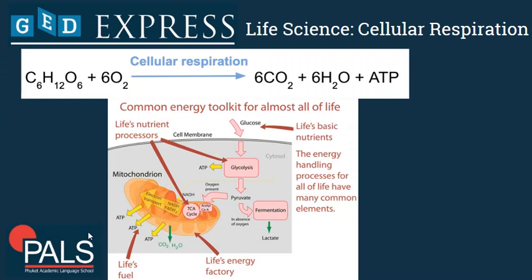Now let's have a look at respiration in more detail. Glucose enters our cells and is first broken down into two smaller molecules called pyruvate. This process is called glycolysis and releases a small amount of ATP and energy. Then, usually, if oxygen is present for aerobic respiration, the pyruvate goes into the mitochondria, where aerobic respiration happens and a lot of ATP is produced and released.